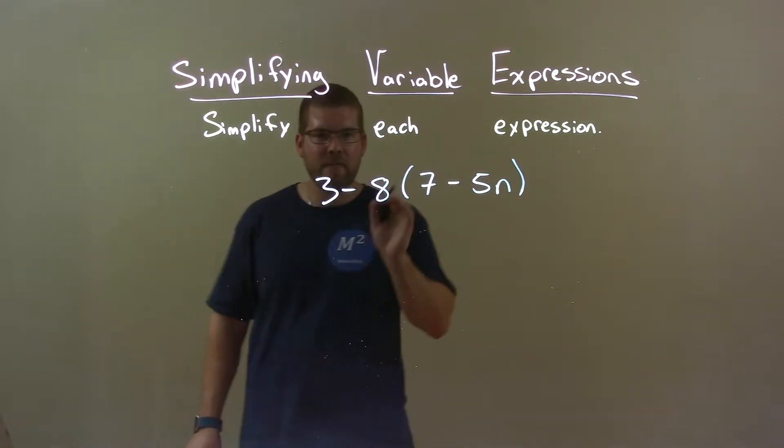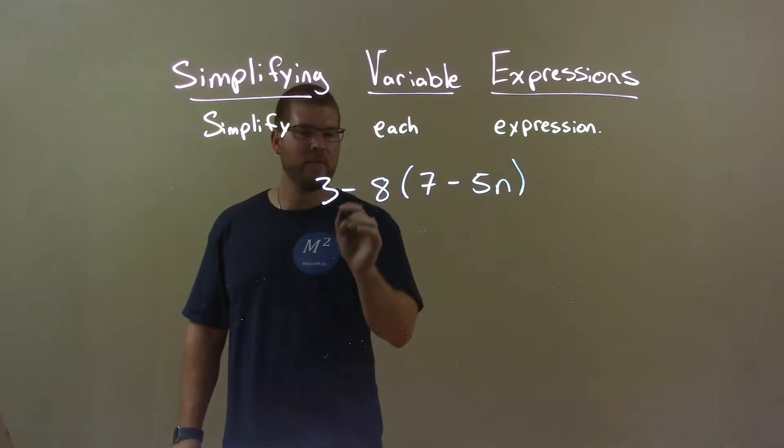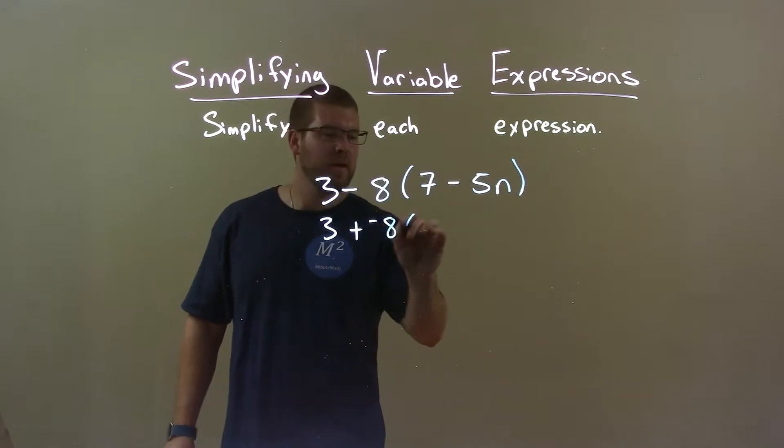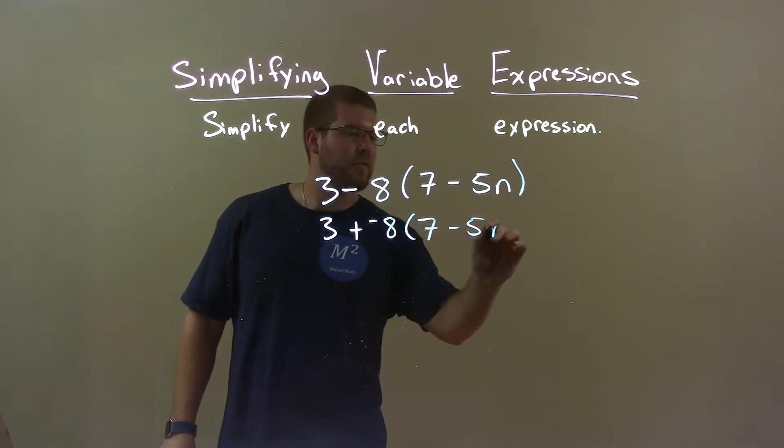Okay, so now we have this minus 8. I find it's easier and you don't make as many mistakes if we take the subtraction and make it to a plus and negative. So minus 8 is plus a negative 8, 7 minus 5n.